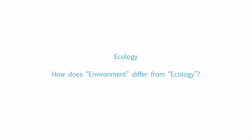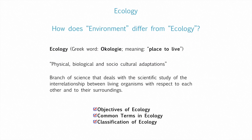What is Ecology and how does it differ from environment? The term Ecology is derived from the Greek word 'oikos', meaning place to live. Ecology is concerned with the place where a living organism lives — it can involve physical, biological or socio-cultural adaptations. The proper definition is: the branch of science that deals with the scientific study of the interrelationship between living organisms with respect to each other and to their surroundings.